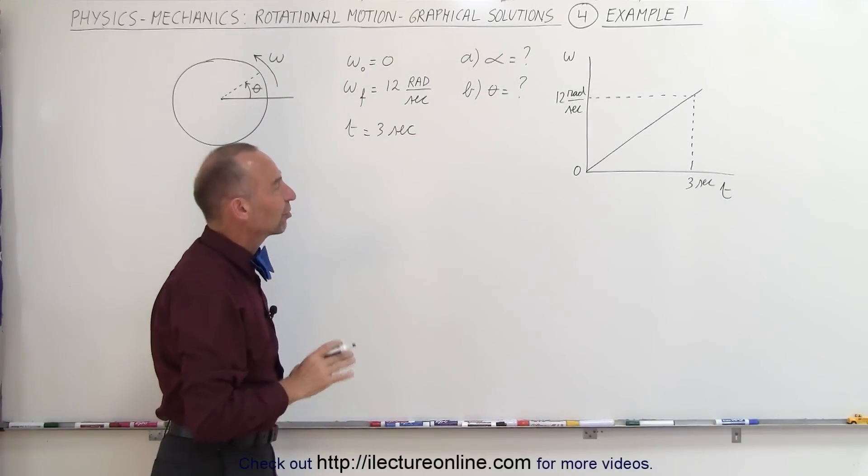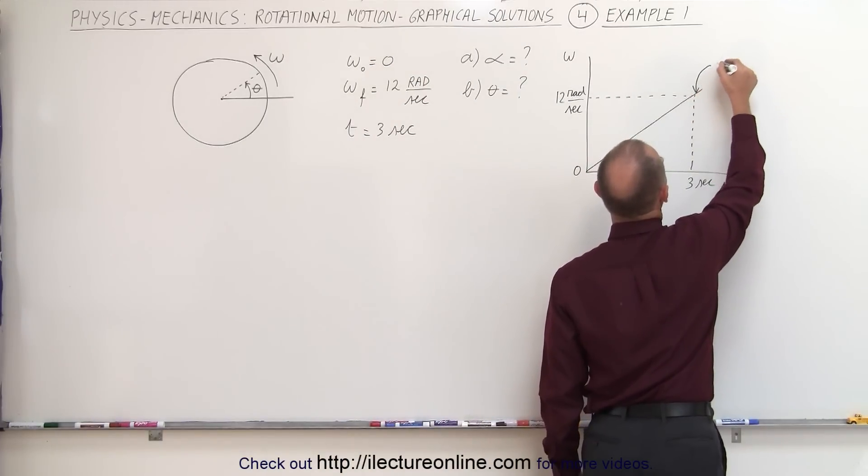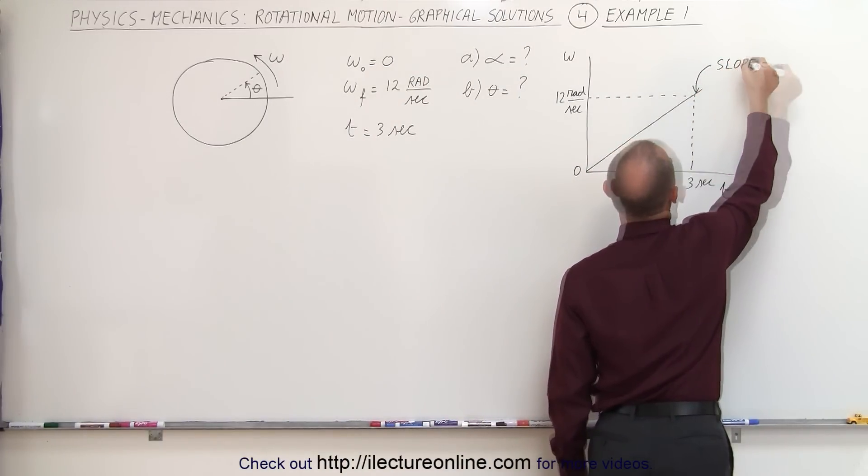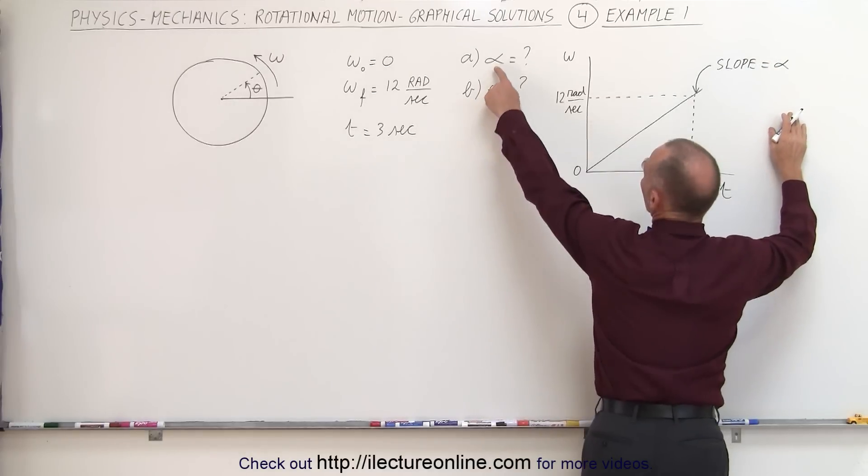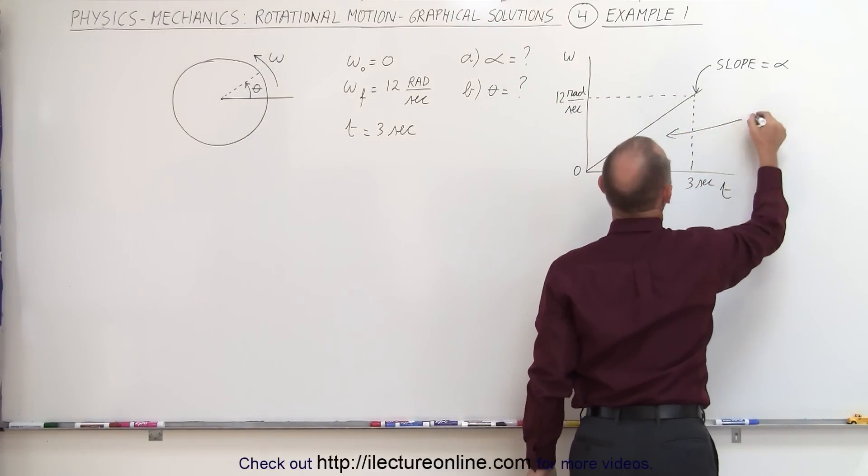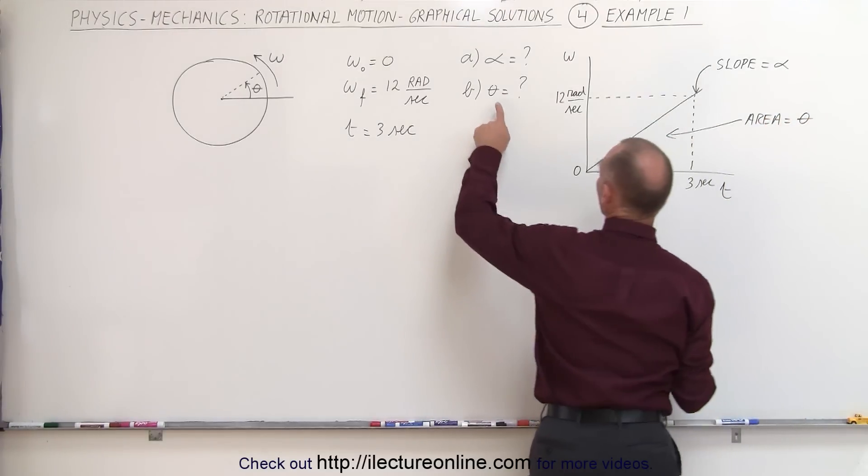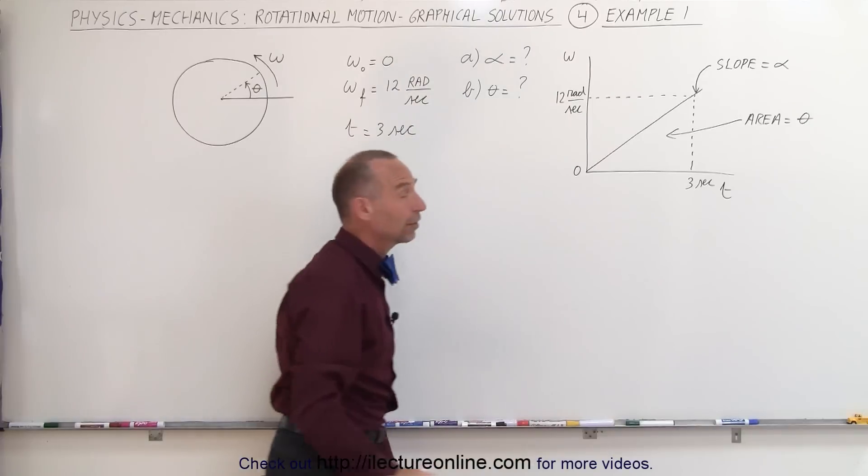What do we know about our omega versus time graph? First of all we know that the slope represents the angular acceleration and that is what they're trying to get us to find over here. And secondly we realize that the area is equal to the angular distance covered, is equal to theta, which is what they're asking us to calculate over there.